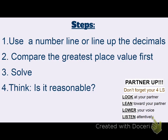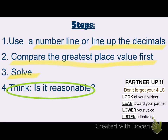Alright, the steps today. Step one: use a number line or line up the decimals — two strategies we can use. Step two: compare the greatest place value first. And finally, after we compare, we solve — decide if the value is greater than, less than, or equal. And we don't want to move on until we think: is it reasonable? Does it make sense? Does the value prove to be greater than, less than, or equal to?